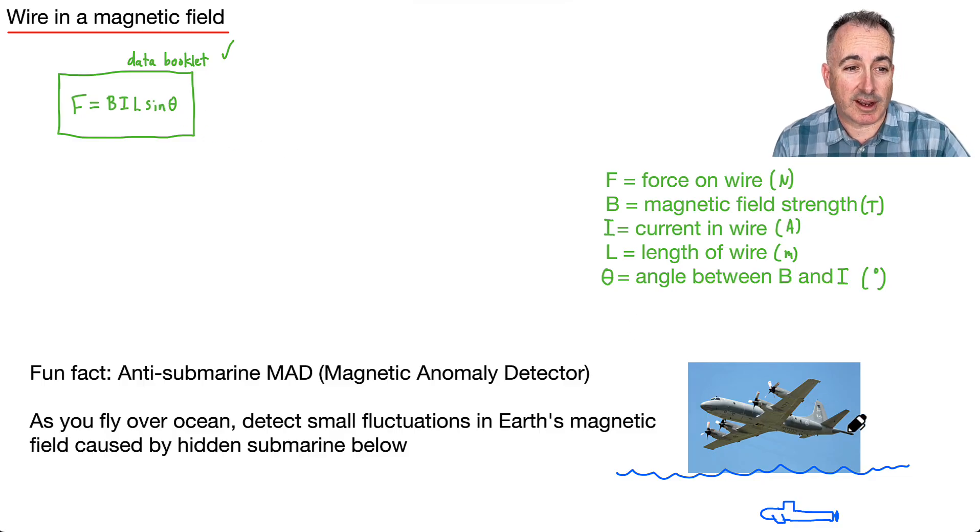So one way to put this all into context, at least. I thought it may be a fun fact. Anti-submarine. So for example, airplanes, their job is to fly around and look for submarines. This, for example, is the Canadian CP-140 Aurora.